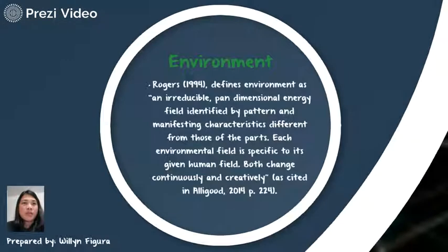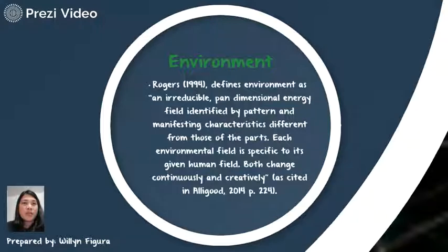Last is the environment. Rogers defines environment as an irreducible, pan-dimensional energy field identified by pattern and manifesting characteristics different from those of the parts. According to the theory, environmental fields are infinite and change is continuously innovative, unpredictable, and characterized by increasing diversity. Environmental and human fields are identified by wave patterns manifesting continuous mutual change.